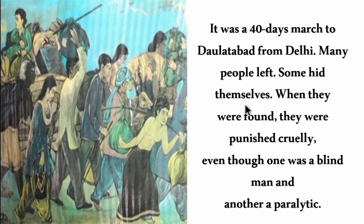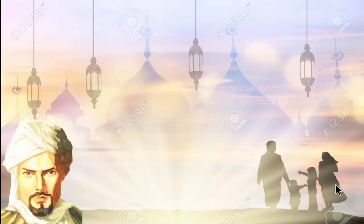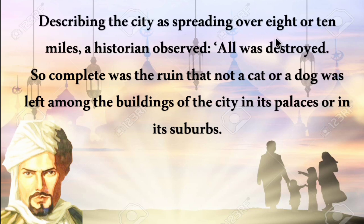Many people hid themselves during the forced transfer; when found, they were punished cruelly. Even two who remained — one blind man and one paralytic — were not spared. Ibn Battuta described the city as spreading over 8 to 10 miles, with not a cat or dog left in its buildings, palaces, or suburbs.